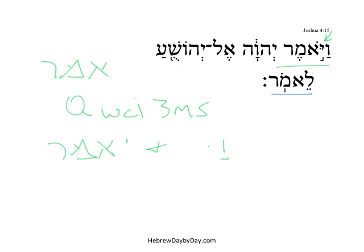Lemor is also very common. It, too, comes from Amar. In this case, we have a Kal infinitive construct, with a Le attached to the beginning, as there often is with the infinitive construct.